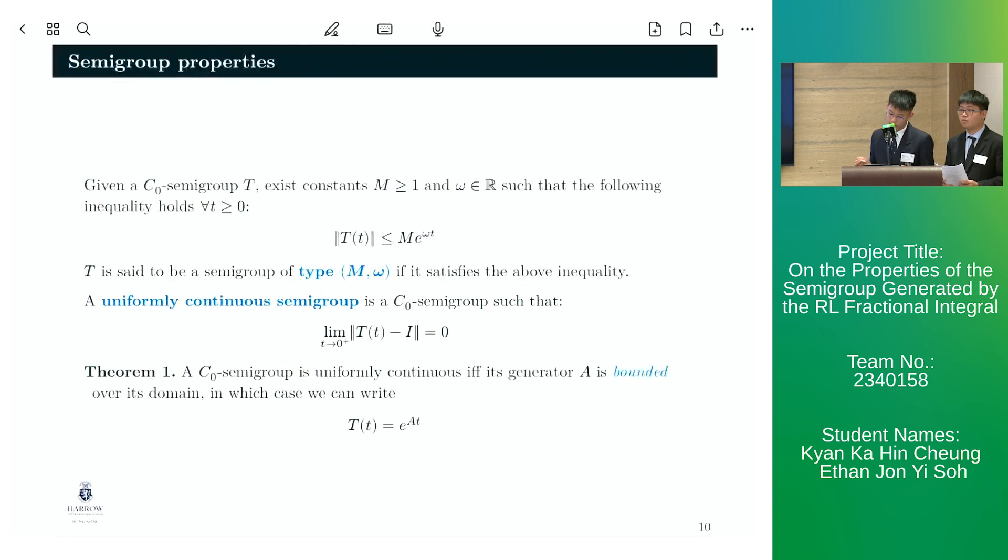We now introduce further classifications of semigroups. A uniformly continuous semigroup is a C0 semigroup that converges towards the identity operator in the norm sense, as described by the limit below.